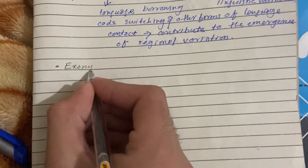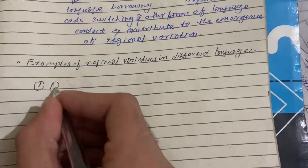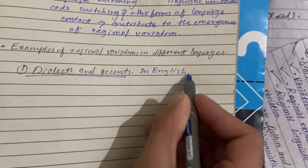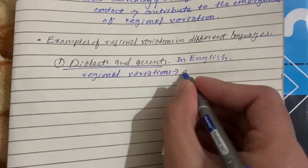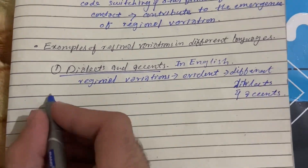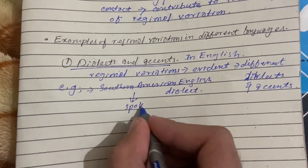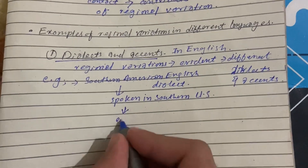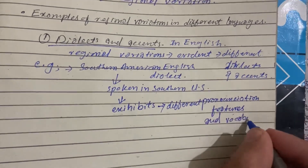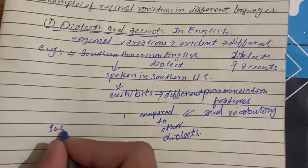Now we will look at examples of regional variations in different languages. Number one is dialect and accent. In English, regional variations are evident in different dialects and accents. For example, Southern American English, spoken in the southern United States, exhibits distinct pronunciation features and vocabulary compared to other dialects like New York English or British English.